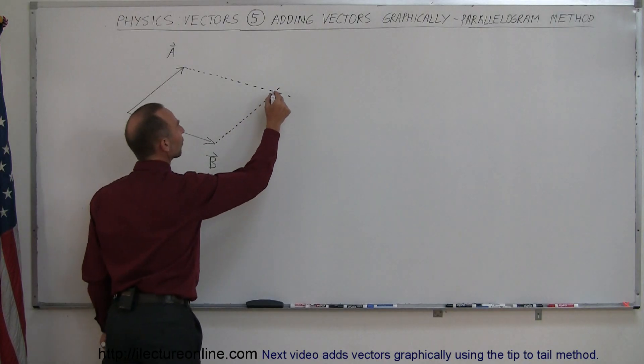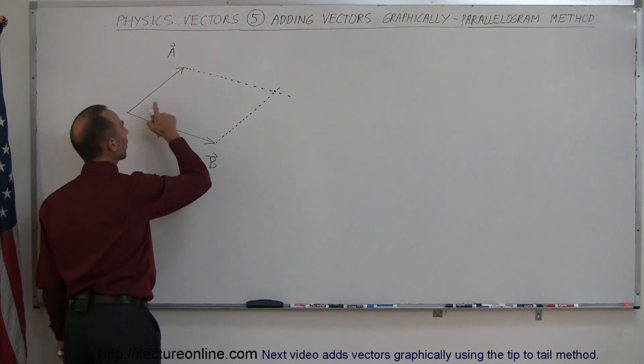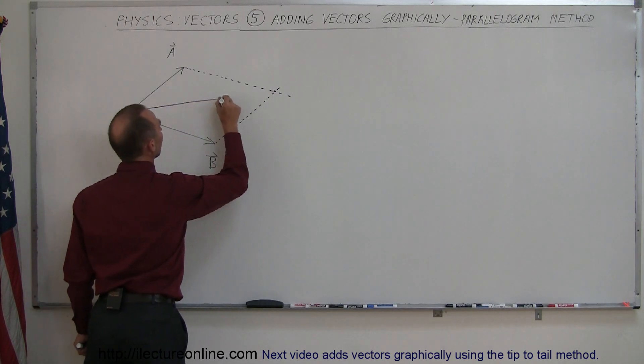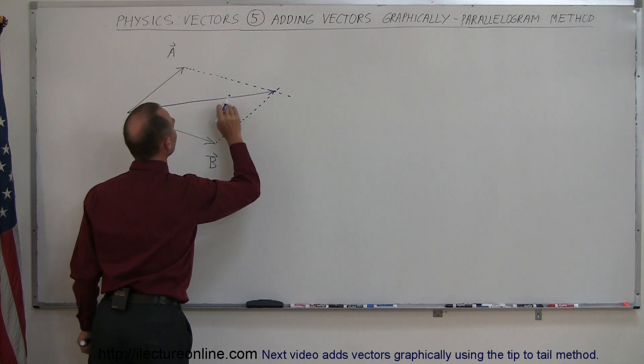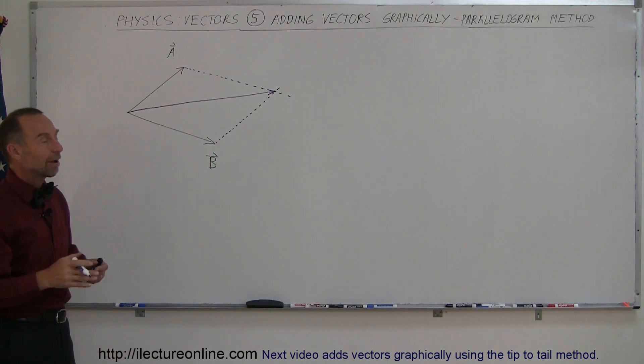That is the point where the sum of the two vectors will end if you draw a line from where they both start to that point right there. So if I draw a straight line like this, and then put a little arrow on it. This here represents the sum of vector A and B in a graphical sense.